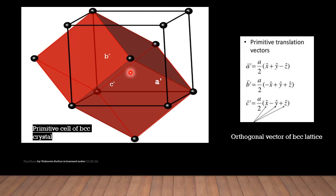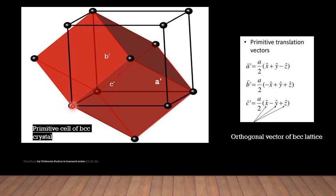Now, what is the direction? If this is the origin, this is the x-axis, this is the y-axis, and this is the z-axis — plus z-axis in this direction and minus z-axis in the other direction. So this atom has its position along the plus x-axis and plus y-axis, but it is lying in the minus z-axis direction.